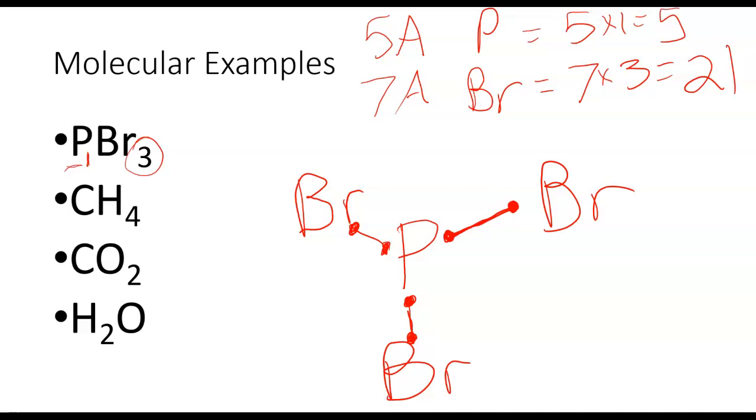Now, I'm going to satisfy the octet. So what that's going to mean is I'm going to look at each individual atom and figure out how many more electrons it needs to get to a full octet. So phosphorus here in the middle. Each of these electrons is going to count for both the phosphorus and the bromine. So phosphorus here is going to have one, two, three, four, five, six electrons so far. It needs eight. So I'm going to add two more. We always add electrons in pairs.